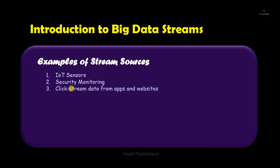Another source is the financial market. This is one of the biggest sources of stream data, where a large number of trading and operational activities occur throughout the entire world involving different companies and organizations. Through this, a huge amount of stream data is generated — real-time and continuous — and this data can be used for analysis as well as prediction for future finance.